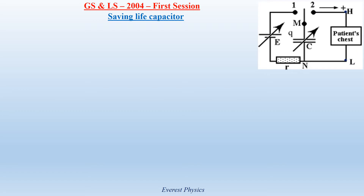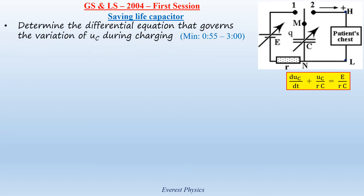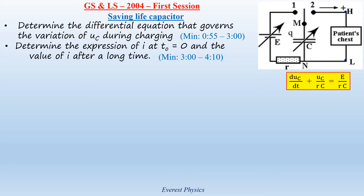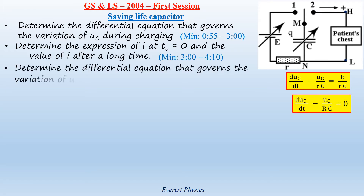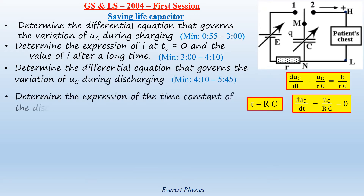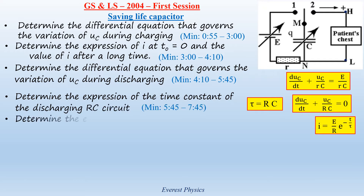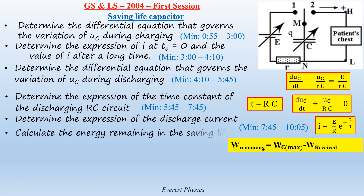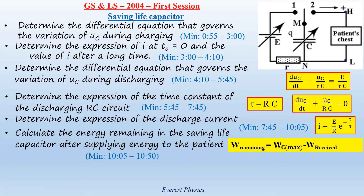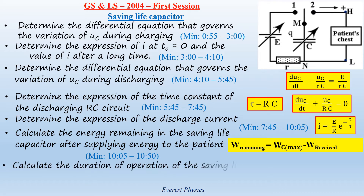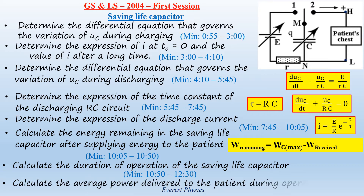In this official exam exercise, we are going to determine the differential equation that governs the variation of UC during charging. Determine the expression of i at time zero and the value of i after a long time. Determine the differential equation that governs the variation of UC during discharging. Determine the expression of the time constant of the discharging RC circuit. Determine the expression of the discharge current. Calculate the energy remaining in the saving-life capacitor after supplying energy to the patient. Calculate the duration of operation of the saving-life capacitor. Calculate the average power delivered to the patient during operation.